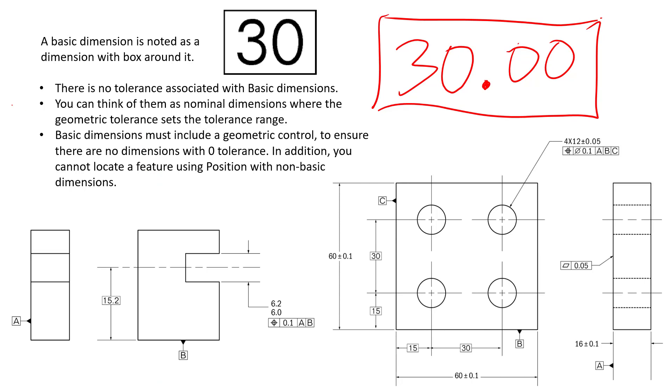Let me go over this last bullet before I go over the drawing on the right side. Basic dimensions must include a geometric control to ensure there are no dimensions with zero tolerance. In addition, you cannot locate a feature using position with non-basic dimensions. Looking at the drawing on the right we have this 15 millimeter up and 15 millimeter over, and we have some other videos in the video question line about position. If you want more information on this I encourage you to look those videos up.